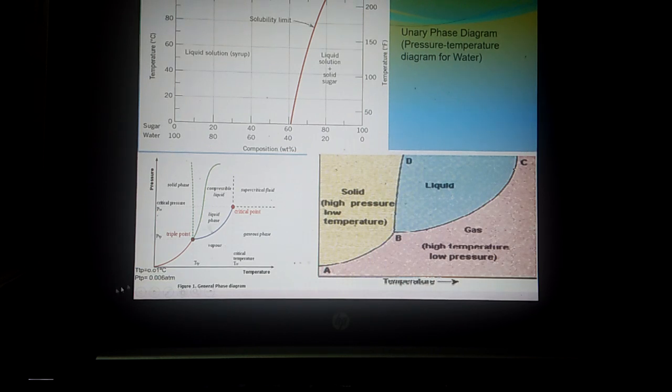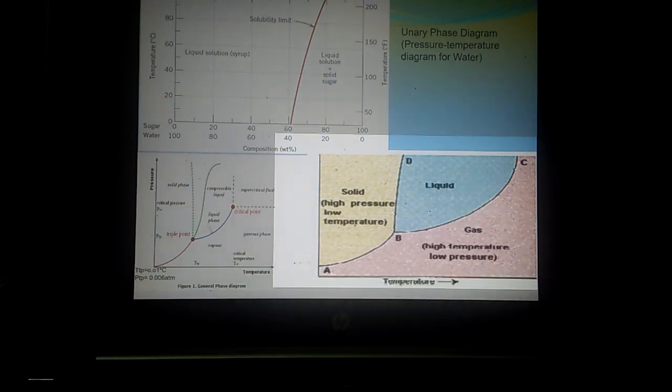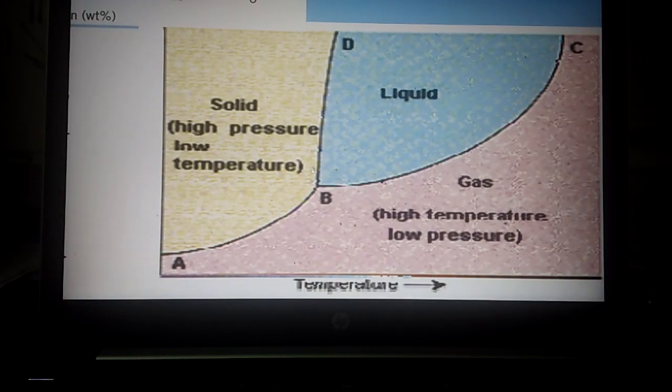Now next is unary phase diagram. Unary means single component. So here we are taking water as a single element. This is a pressure temperature diagram for water. Now here you can see, this is the unary phase diagram for water.